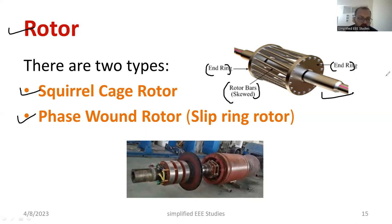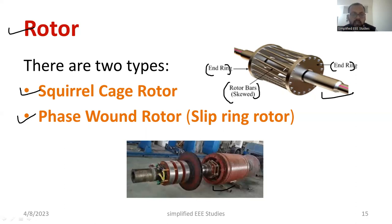If I talk about the wound rotor, also called the face wound rotor, this is its structure. Here you can connect external resistance. I will show you the detailed diagram — this is a practical view taken from reference sources.